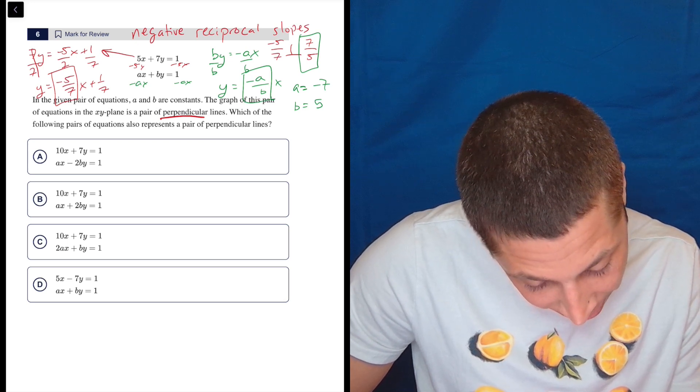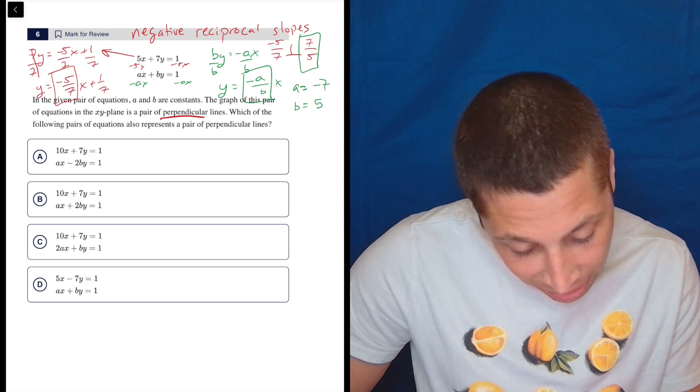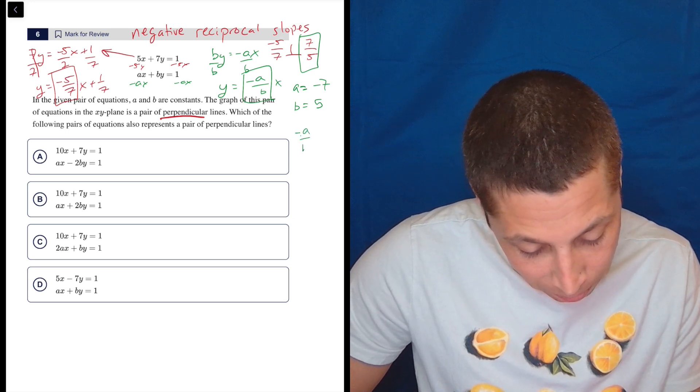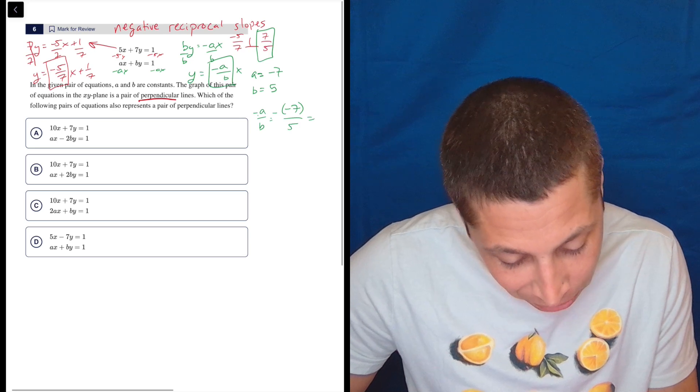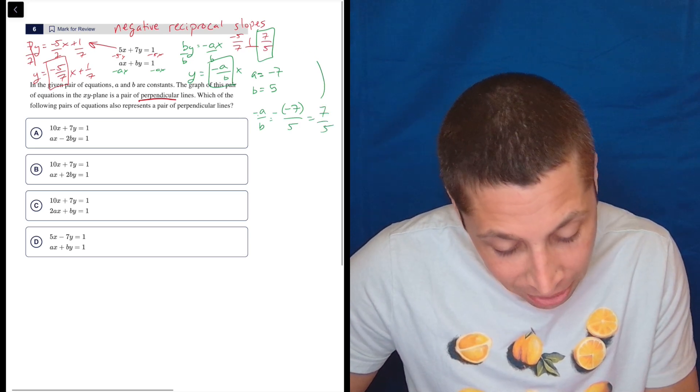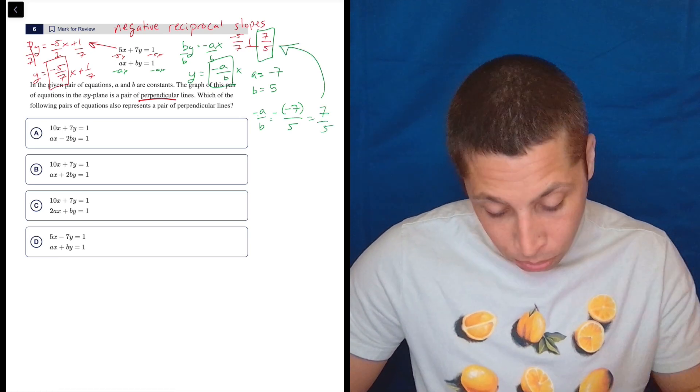So negative 7 and 5. So now let me think about that. Is that right? Because then this would be negative negative 7. Oh my gosh, I'm already worried about it. So that would be negative negative 7 over 5, which is positive 7 over 5, which is the slope we need it to be. Okay, there you go.